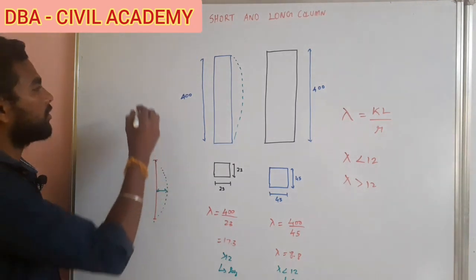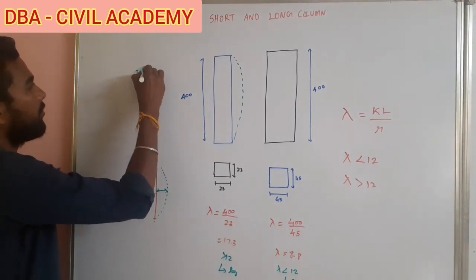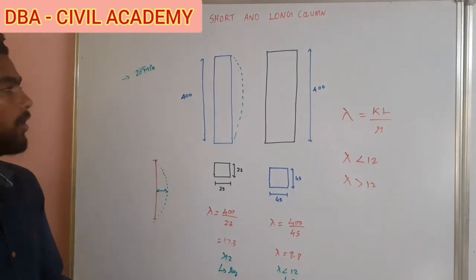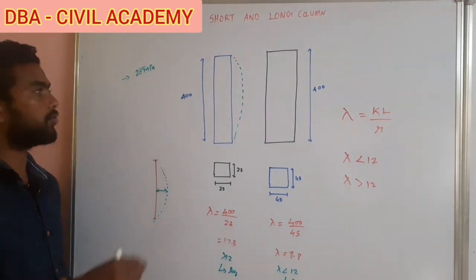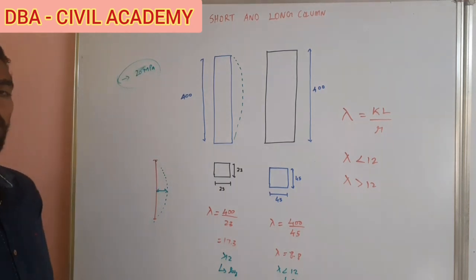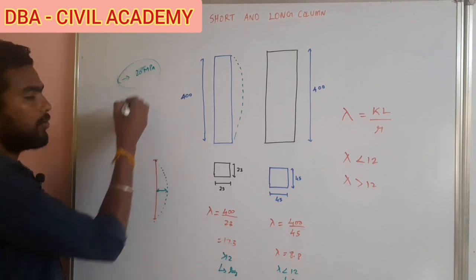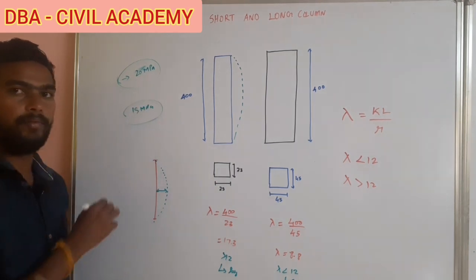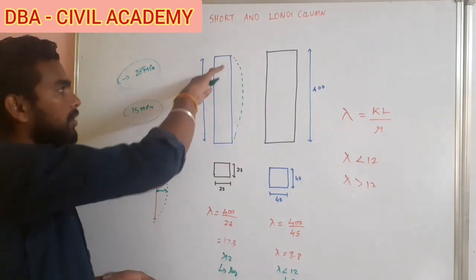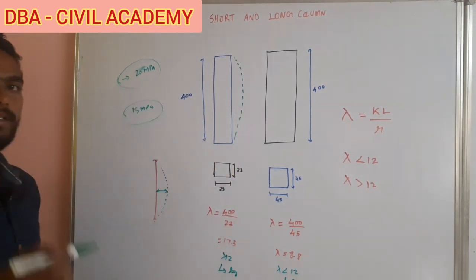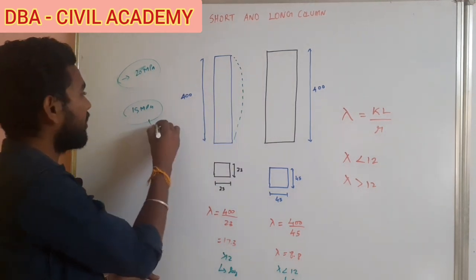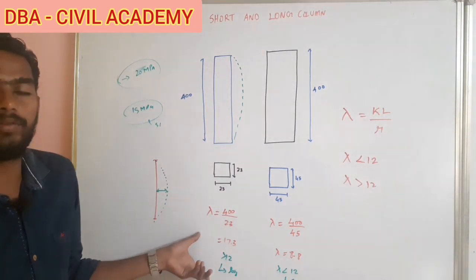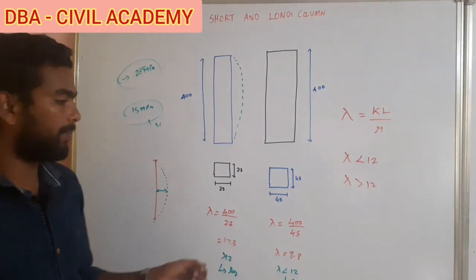For example, with M20 concrete, the maximum stress is 20 MPa. For a long column, buckling occurs as geometrical failure at around 15 MPa, which means 5 MPa of the material capacity is wasted. A short column uses the full crushing strength. Therefore, a short column can carry the same load with greater economy compared to a long column.